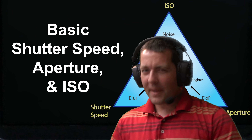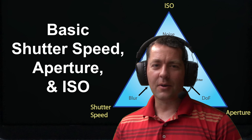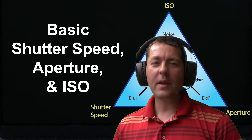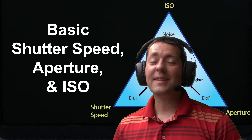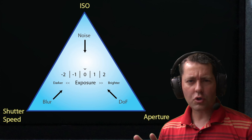Today we're looking at basic shutter speed, aperture, and ISO, and how to make them all work together. The exposure triangle.